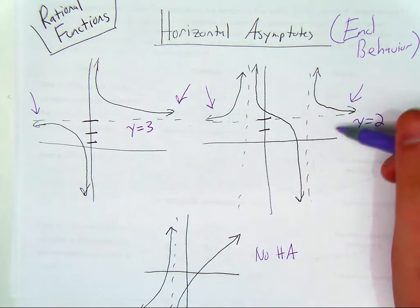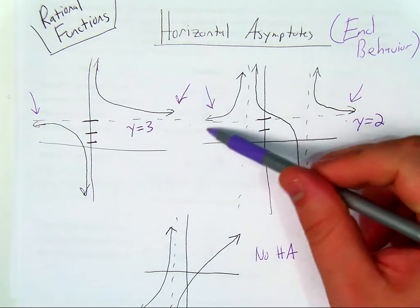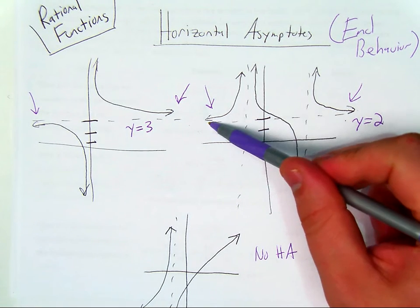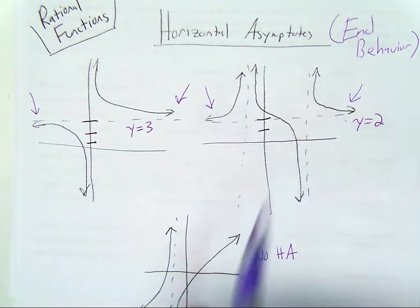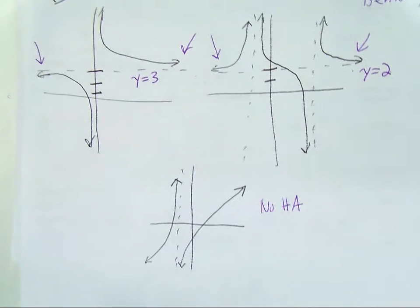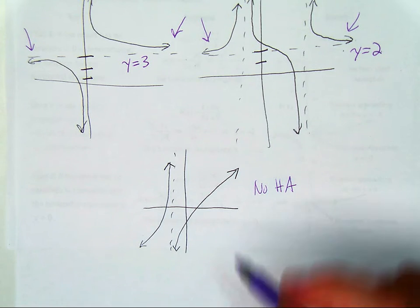As x approaches infinity, y is approaching 2. As x approaches negative infinity, y is approaching 2. Now not every rational function will have a horizontal asymptote.